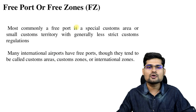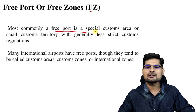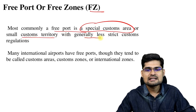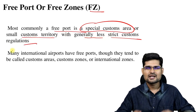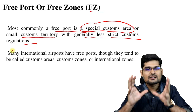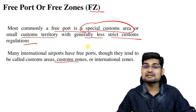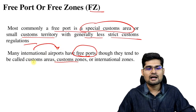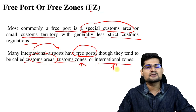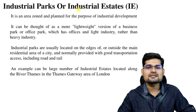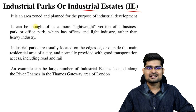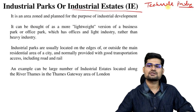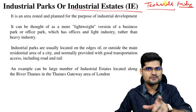Then comes free ports or free zones. These are common free port areas with special customs territories which generally have less restrictive customs regulations. It's a liberal customs policy in a given zone, very important for international trade. Many international airports have these free port zones or international zones. Technology parks are also established in industrial parks, which we'll discuss at the end of this lecture.